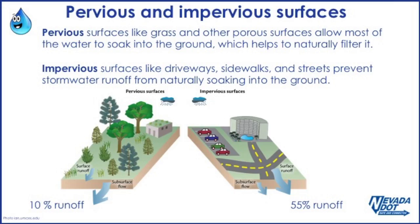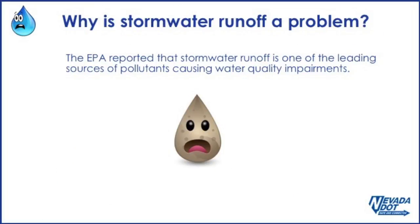Pervious surfaces, like grass and other porous surfaces, allow most of the water to soak into the ground, which helps to naturally filter it. Impervious surfaces, like driveways, sidewalks, and streets, prevent stormwater runoff from naturally soaking into the ground. Why is stormwater runoff a problem?